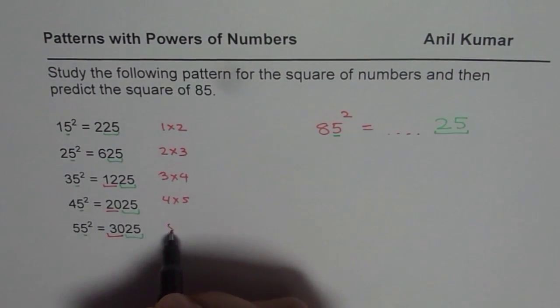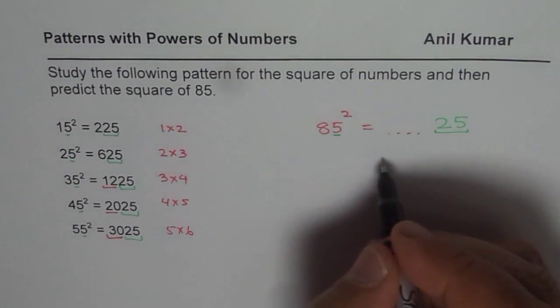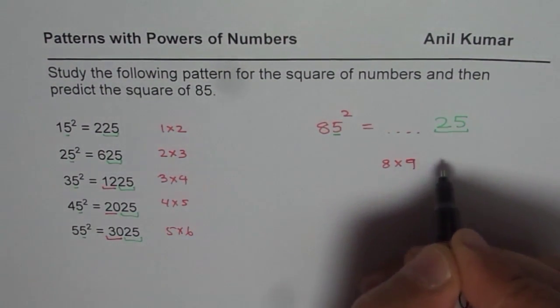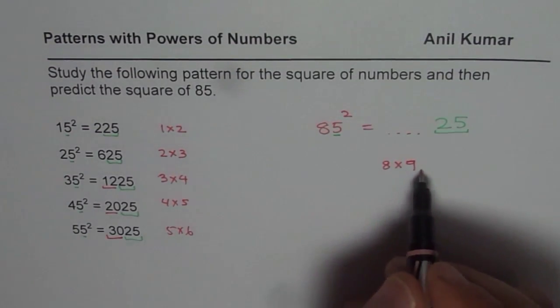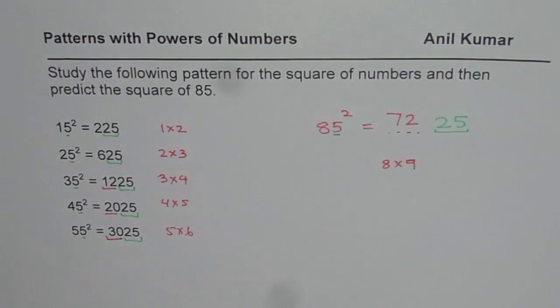that is correct. 5 times 6 is 30, that is fine. So what is 8 times 9? So the number should be 7225, correct. So we get our